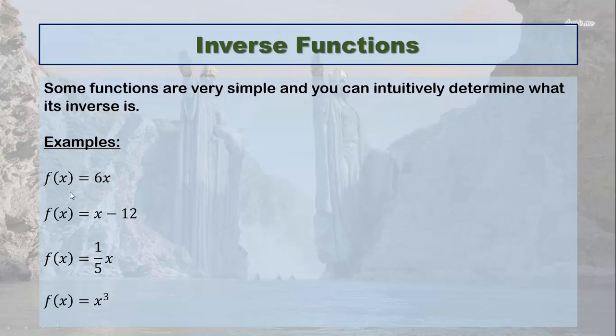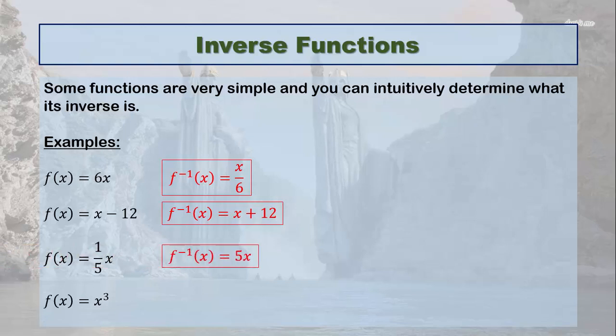Okay, so if I start by multiplying x by 6, the opposite of that is to divide x by 6. So f inverse of x is x divided by 6. If the original is to subtract 12, the inverse will be to add 12. Here I'm multiplying by 1 fifth, which is really the same as taking x divided by 5. So the opposite of x divided by 5 is 5x. And the last one, the opposite of cubing is cube rooting. So if there's a single operation like there is in this case, you should be able to intuitively figure out what the inverse is. When there's more operations than one, we're going to have to do some algebraic things, and that's going to be in a later video.